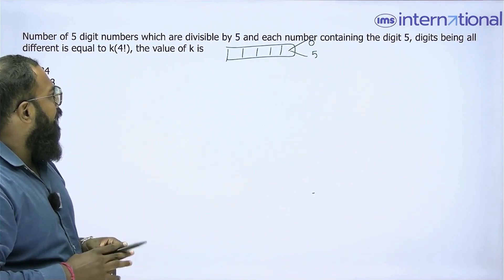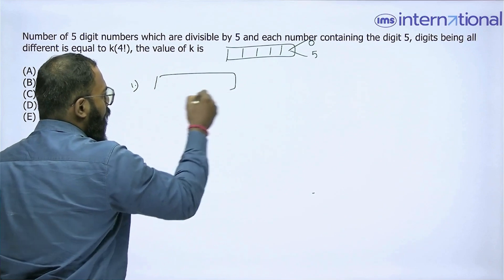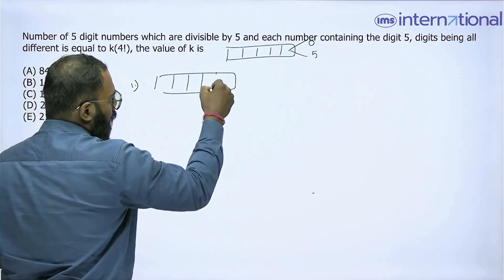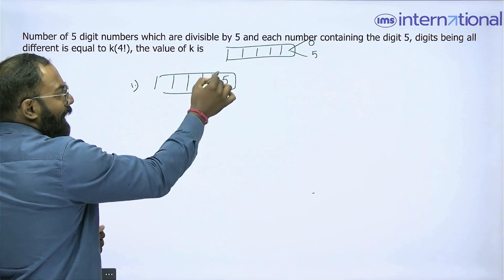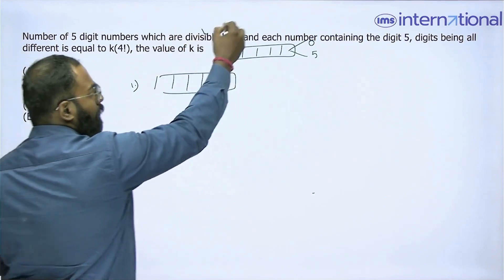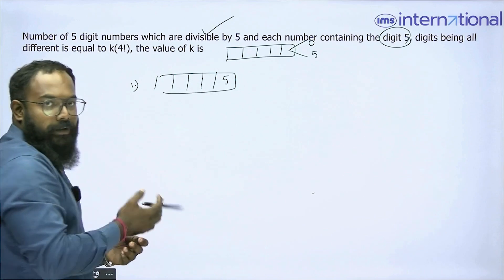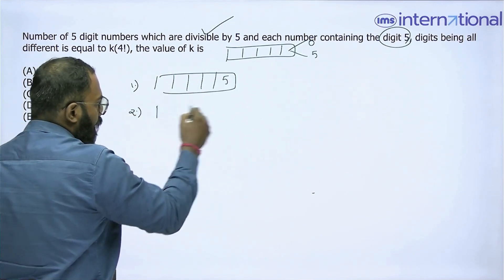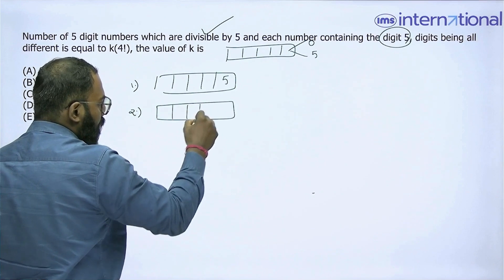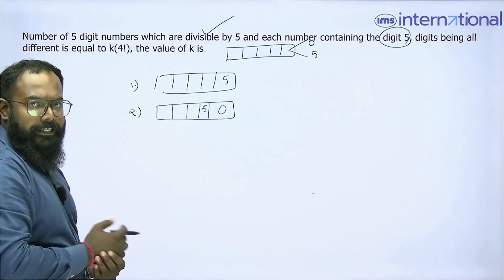Let's discuss each case individually. Case number 1: when we have a 5-digit number which ends with a 5. A 5-digit number that ends with a 5 is completely divisible by 5 and also has the digit 5 in it. The second case is when this 5-digit number ends with 0 and has a 5 at its tens place.